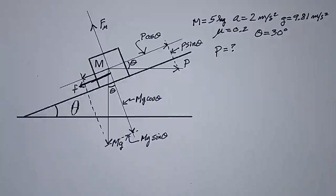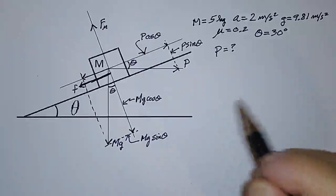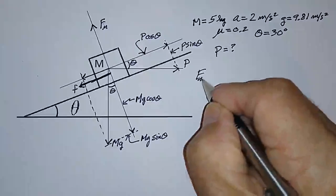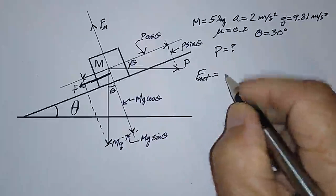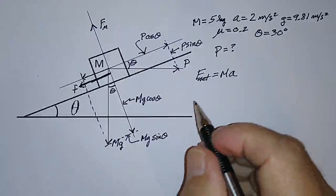Newton's second law is that the net force produces mass times acceleration, or F net is equal to M times A. So how do we write that?